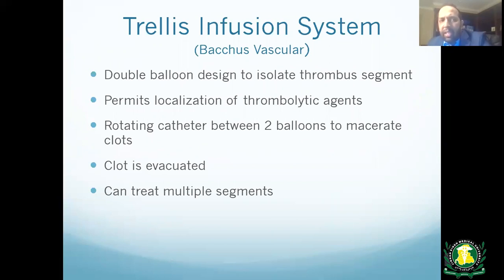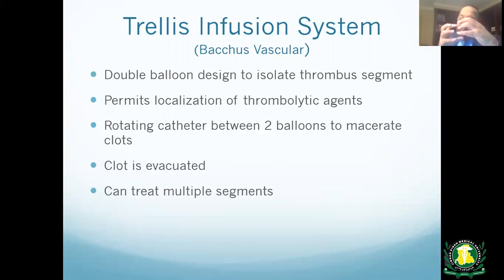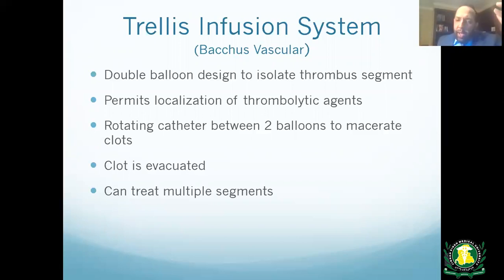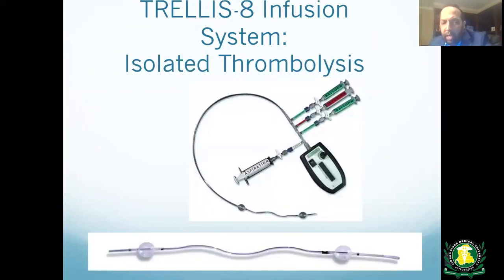The Trellis system uses two balloons that isolate the clot segment in between. Once the balloons are inflated, a rotating catheter between them macerates the clot, which is then aspirated via syringe — the balloons prevent any clot from embolizing distally. It can treat multiple segments and is shown here with the two inflated balloons, the maceration zone in the middle, and the aspiration syringe.